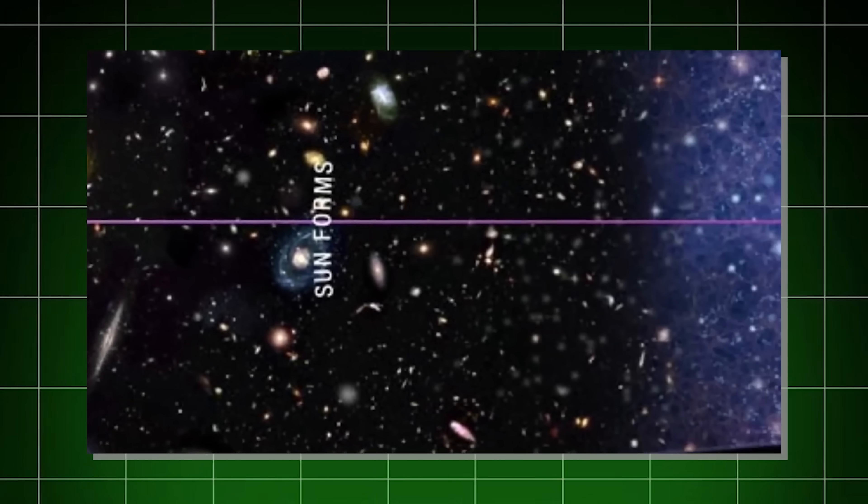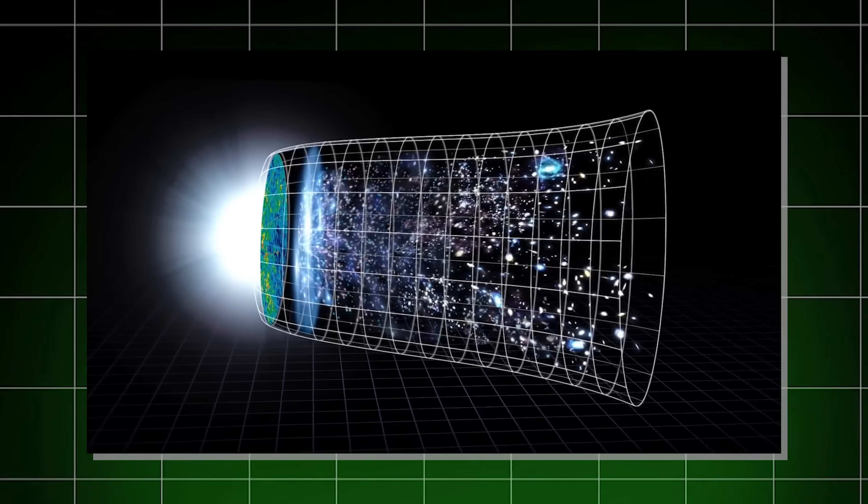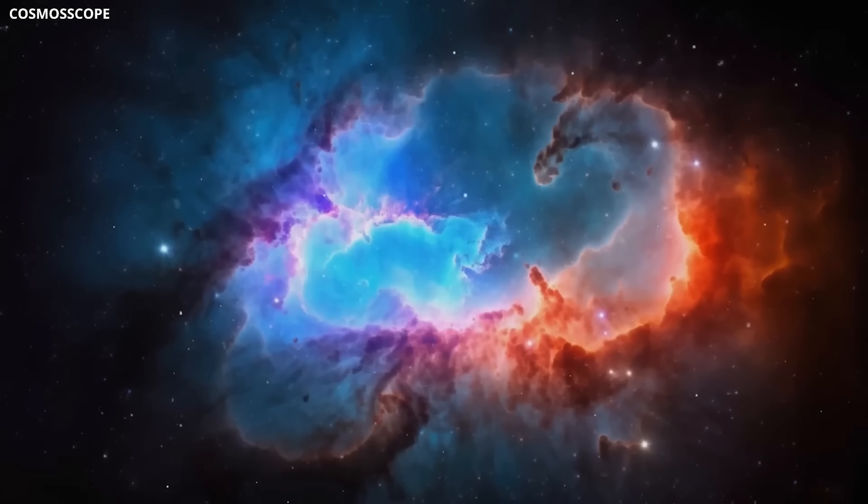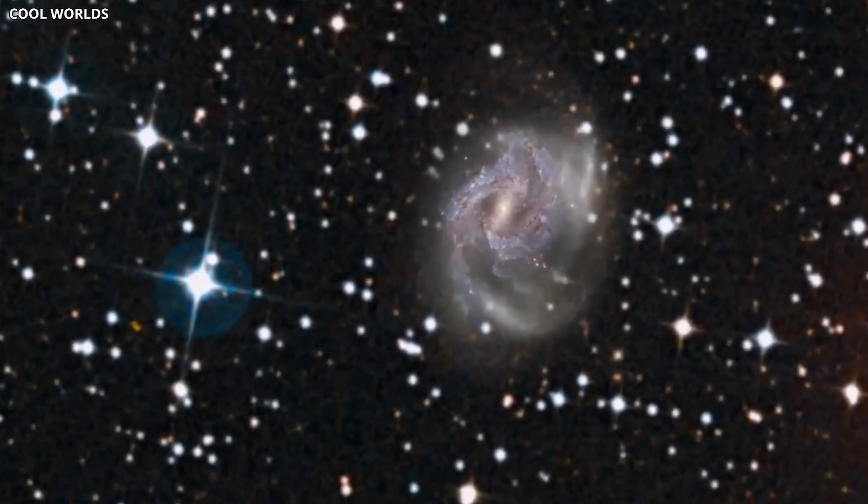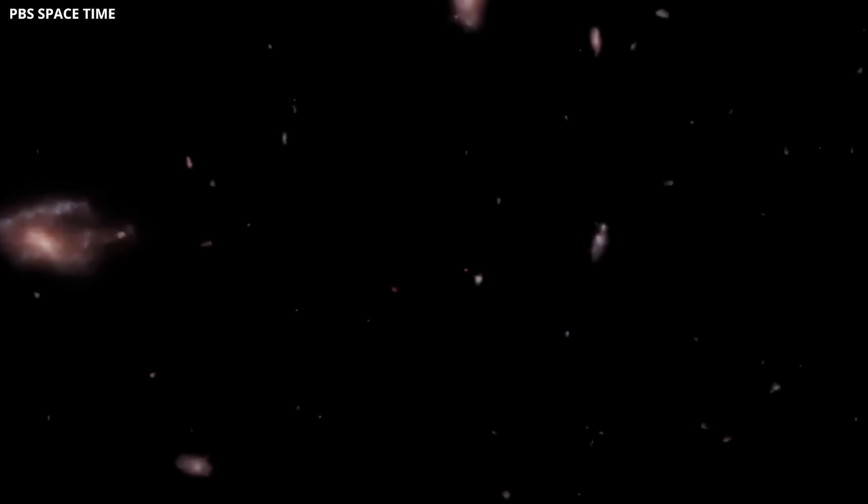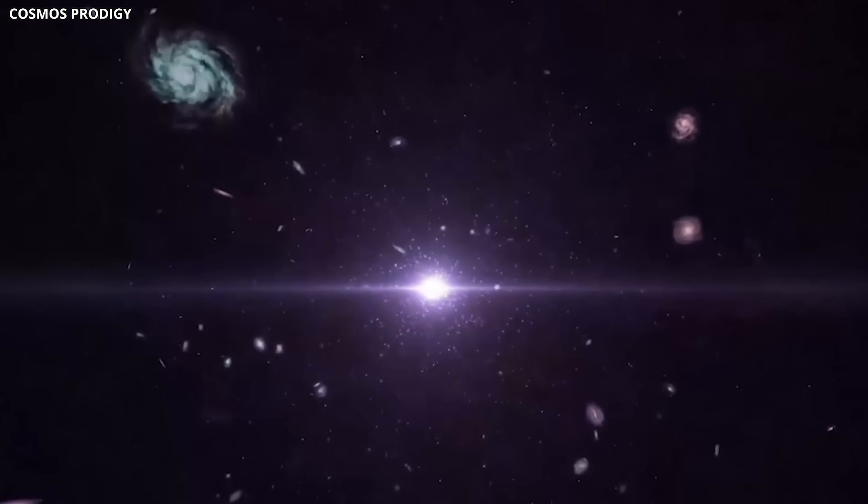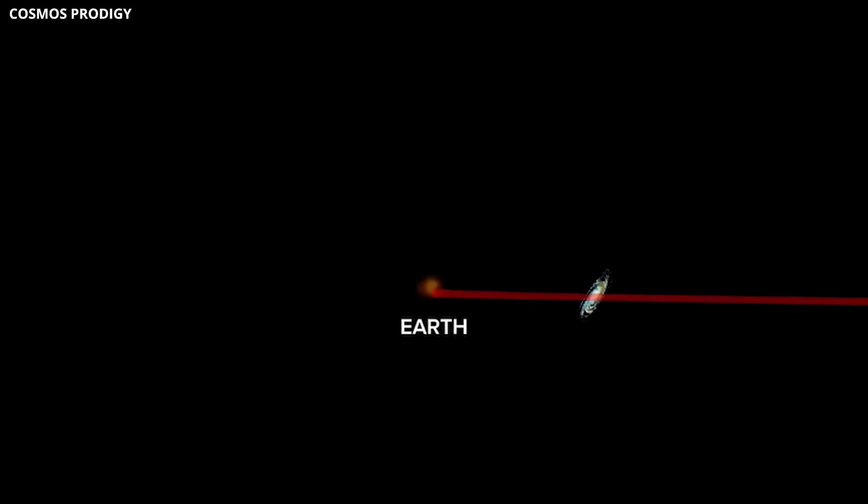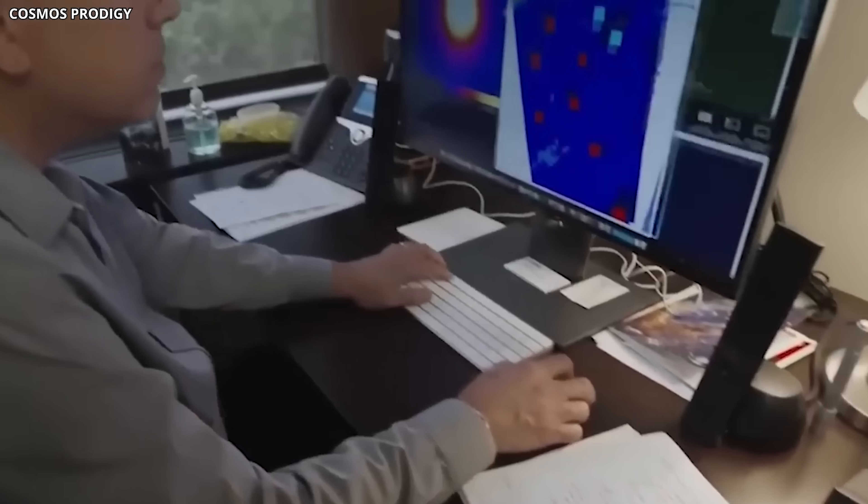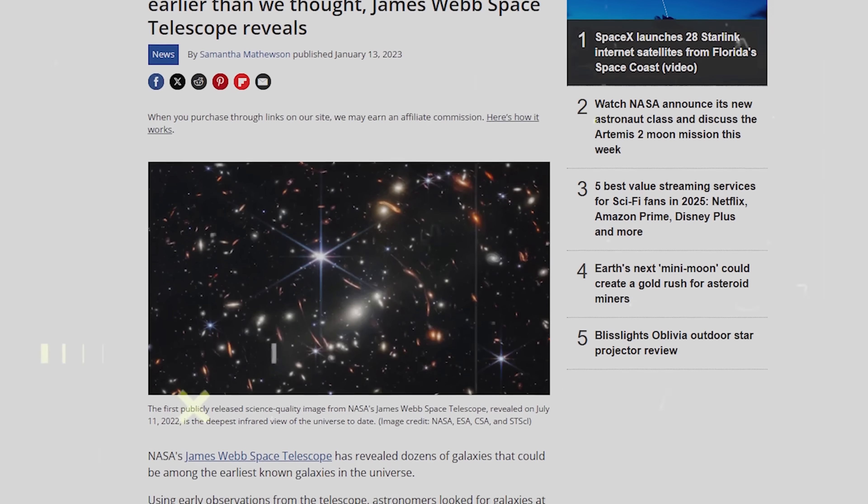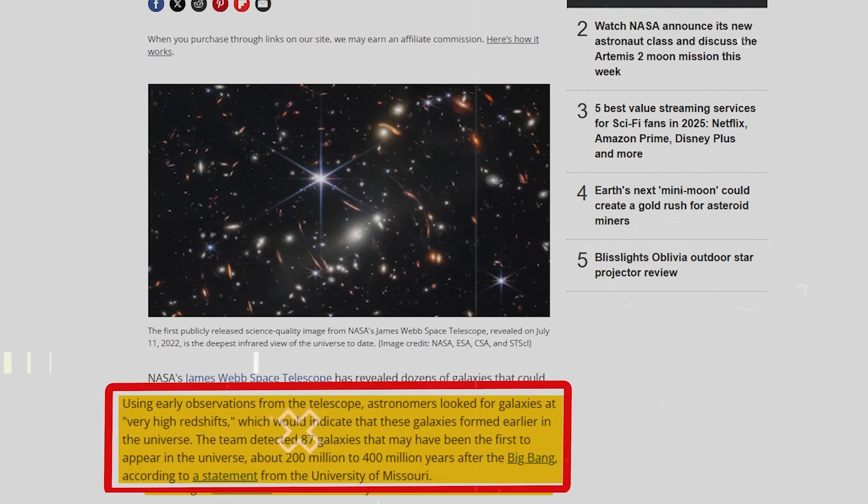The recent discoveries made by the Webb Telescope are profoundly challenging our existing theories about galaxy formation and the evolution of the universe. Initially, scientists anticipated that when the Webb Telescope focused on the distant reaches of the cosmos, it would observe the earliest stars and galaxies from the edge of the observable universe. However, during its latest observations of this uncharted territory, the telescope uncovered an array of unusual, luminous objects that do not conform to the characteristics of early galaxies. Despite numerous observations aimed at deciphering the nature of these enigmatic objects, scientists are struggling to categorize them.